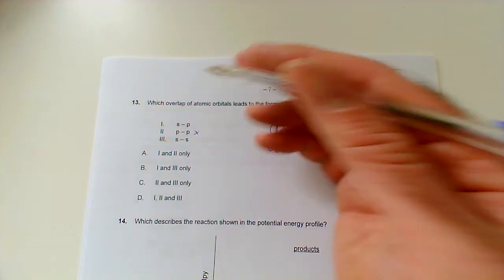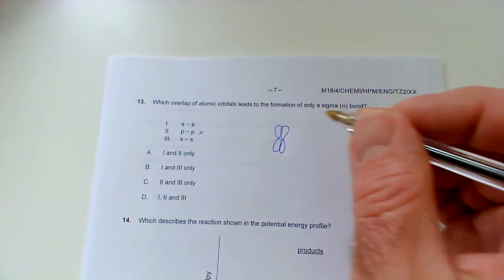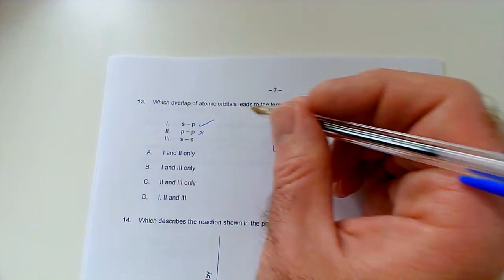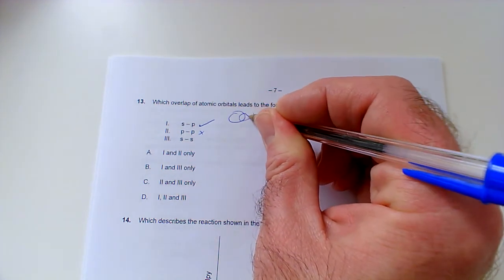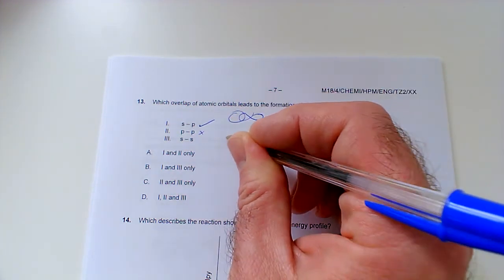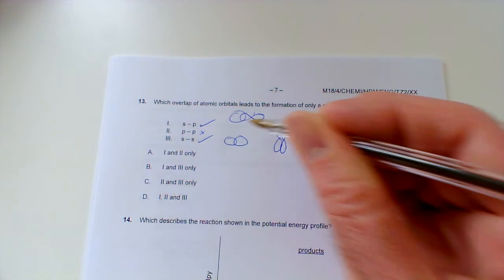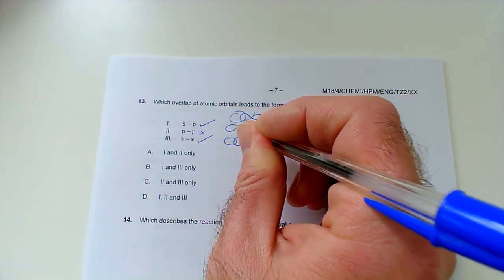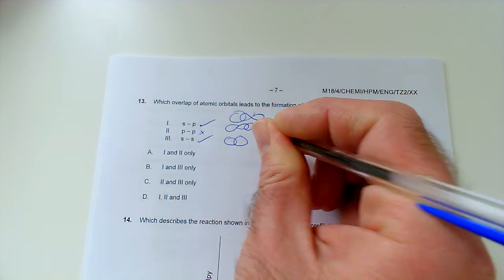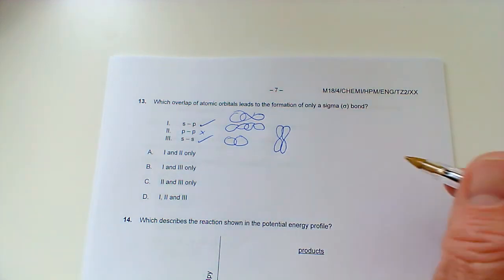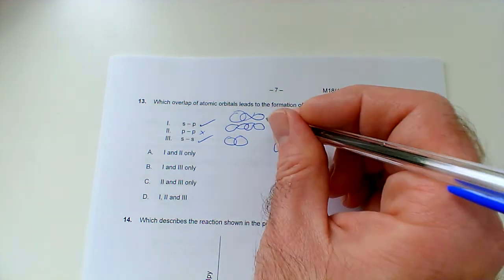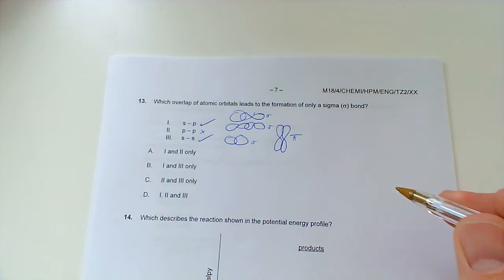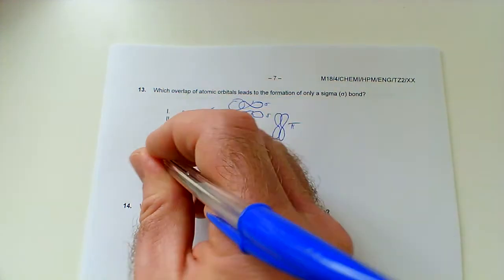We're not going to go with this one because it can also give you a pi bond if they overlap sideways. S and p - well, the shape of the s is a sphere, so there's only really one way that it can overlap. So s and p will give you a sigma bond. S and s would be like that, so that could only give you a sigma bond. Whereas the p and p sideways overlap gives results in a pi bond. Sigma, sigma, sigma - so it's one and three only. We're going to go with B.